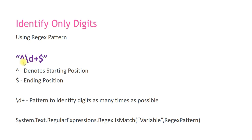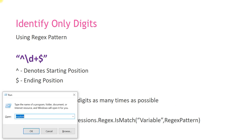The caret symbol denotes the starting position of the regex pattern, and the dollar symbol denotes the ending position. So backslash d is for identifying digits in regular expressions, and if you put the quantifier plus, it will identify digits as many times as possible. I'll quickly open a regex site to demonstrate.